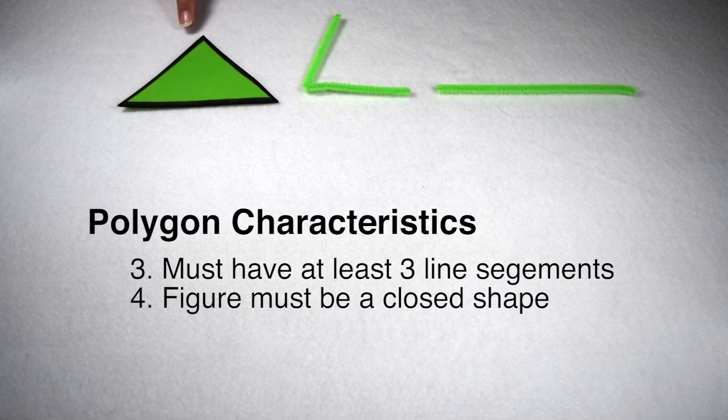When we add a third line segment, that's when we create our smallest polygon in a triangle. All of their line segments can join at an end point, and it's a closed figure because there's no way in or out of it.